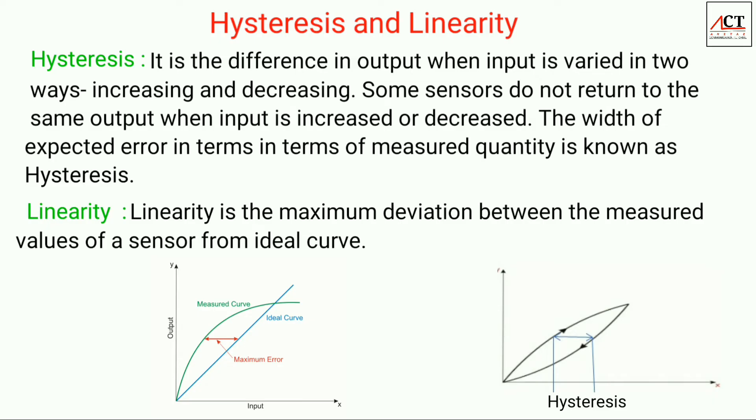Here we can see in the figure, the first figure shows the figure for linearity. This is the measured curve and one is the ideal curve. The ideal curve is the linear one, and so the difference between these gives the maximum error. The second one is the curve for hysteresis. Here we have two curves, one is for the increasing input and one for the decreasing input. And the difference between these two gives the hysteresis.